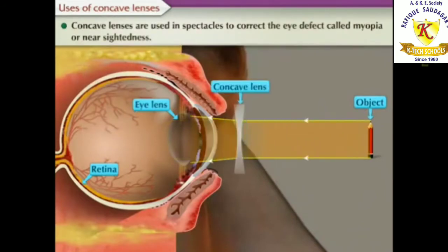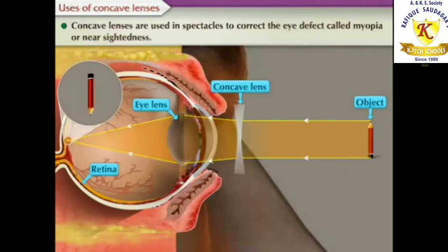Concave lenses are used in spectacles to correct the eye defect called myopia or near-sightedness.